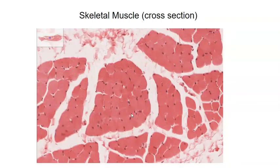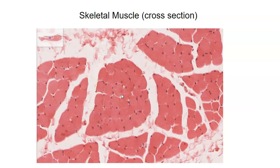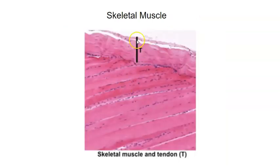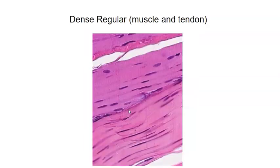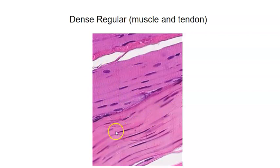Skeletal muscle can also be viewed in cross-section. A distinguishing feature in cross-section is the nuclei located around the periphery of each cell. Here's a preparation showing a tendon — which connects bone to muscle — adjacent to skeletal muscle. You can distinguish them by the striations in the muscle; the tendon is dense regular connective tissue, while the other portion is skeletal muscle tissue.